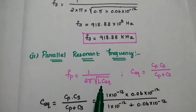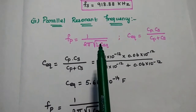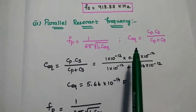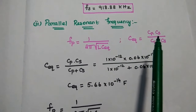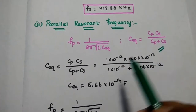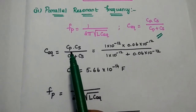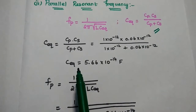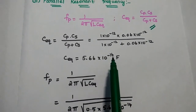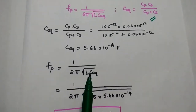Next we find the parallel resonant frequency. The formula is Fp equal to 1 divided by 2 pi square root of L into C equivalent, where C equivalent is equal to Cp times Cs divided by Cp plus Cs. First we find C equivalent by substituting the values of Cp and Cs, giving C equivalent equal to 5.66 times 10 to the power of minus 14 farad.